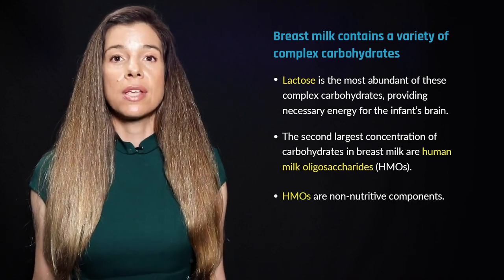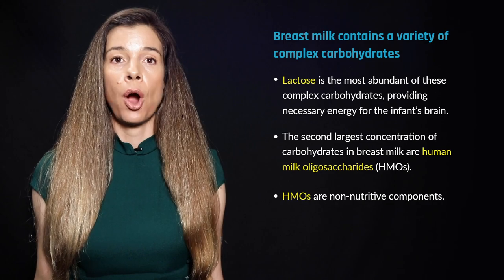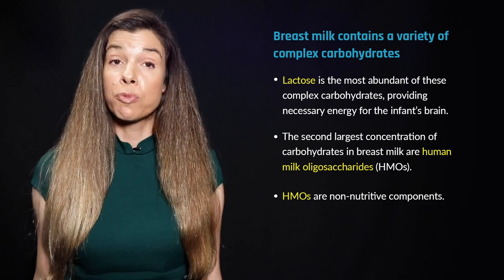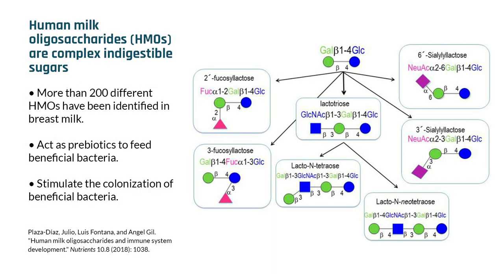So let's talk about HMOs, a fascinating part of the story of breast milk. HMOs are complex, indigestible sugars. More than 200 different HMOs have been identified in breast milk, making them the third most abundant factor in human breast milk after lactose and fat. These things are super abundant, but here's the surprising part — they aren't there to feed the baby.